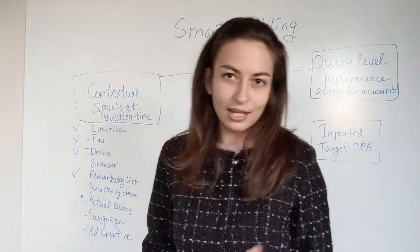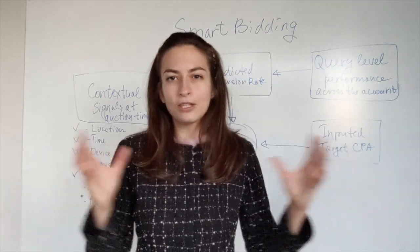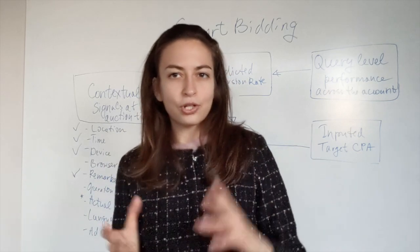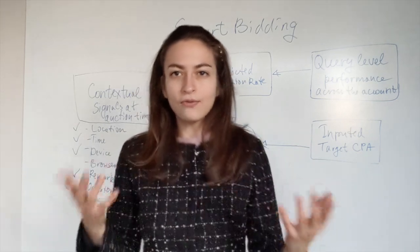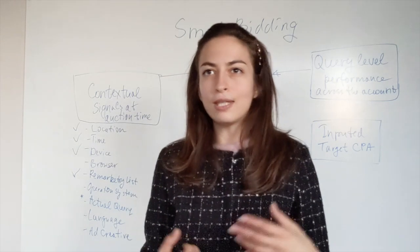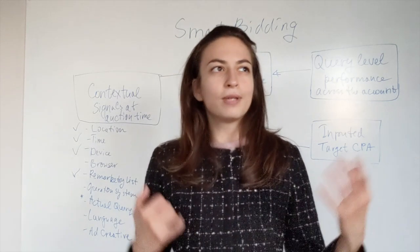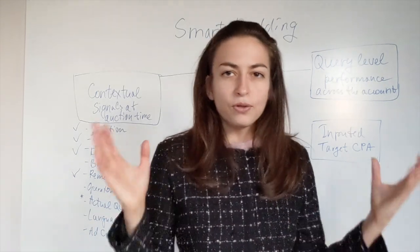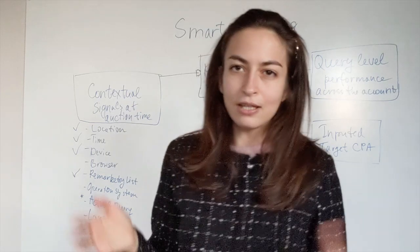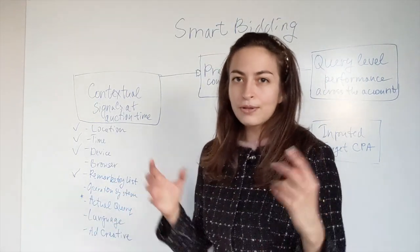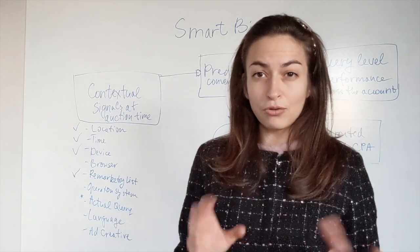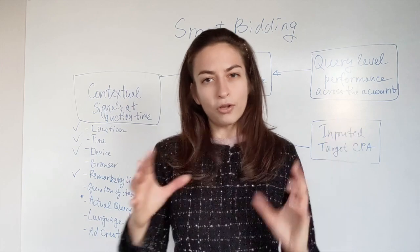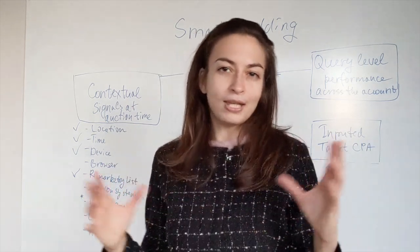Essentially smart bidding is trying to get conversions, trying to get users to take an action that you want them to take. A conversion can be a call to your business, signing up through a form, filling up a quote, or viewing a certain page. You decide what a conversion is. However, Google is going to use all this information to optimize to get you these conversions as much as possible at the desired cost per conversion or cost per acquisition (CPA). This is what the name of this strategy stands for: target CPA.